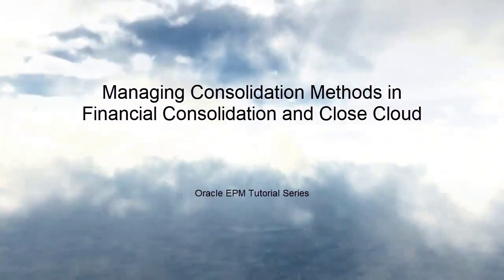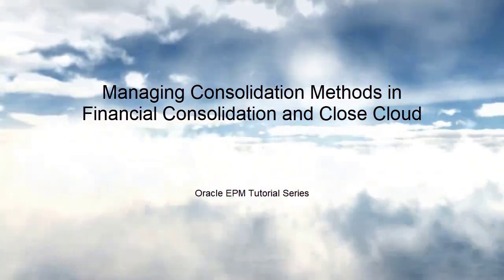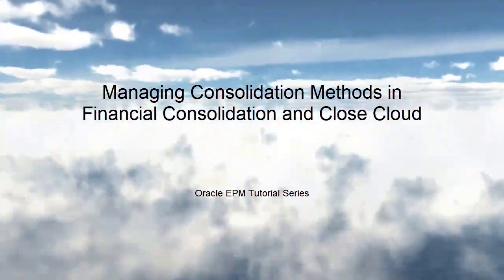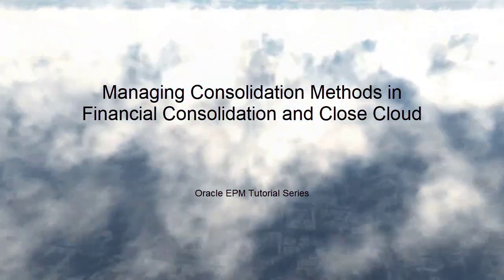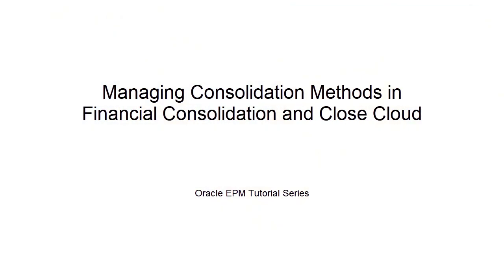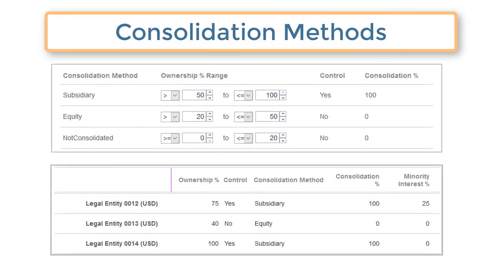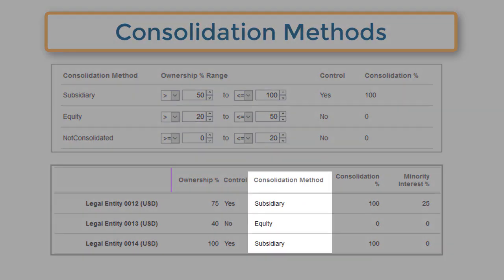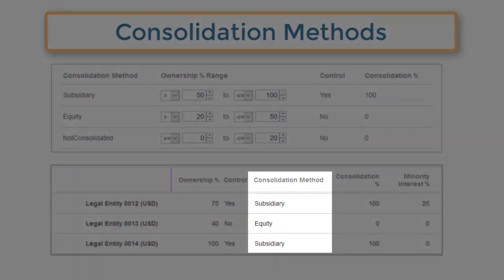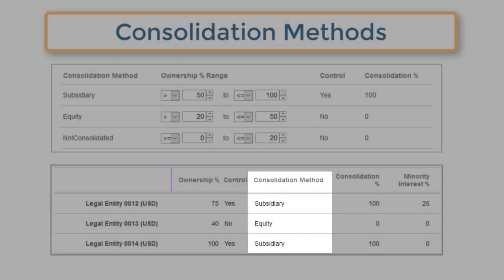Welcome to this step-by-step tutorial on how to create and modify consolidation methods in Oracle Financial Consolidation and Close Cloud. In applications with the Ownership Management feature enabled, the consolidation method assigned to a child entity determines the percentage consolidated to its parent.